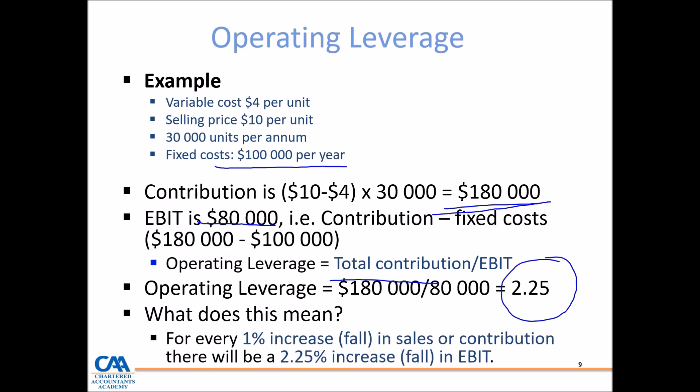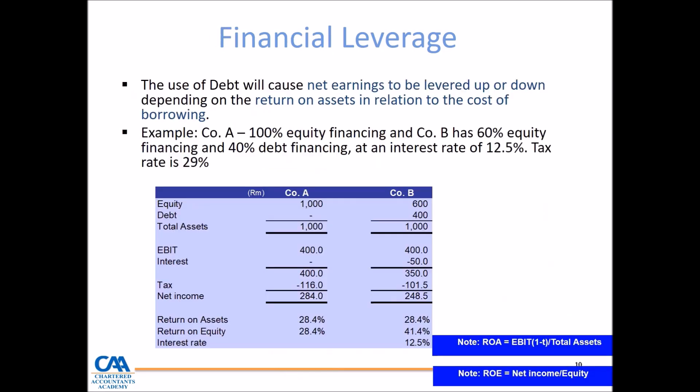An operating leverage of 2.25 means that for every 1% increase in sales or contribution, there will be a 2.25% increase in earnings before interest and tax. The higher the operating leverage, the more risk the business carries. For example, if the operating leverage is 5, then for every 1% fall in sales, there will be a 5% fall in EBIT — making earnings highly sensitive to sales changes.